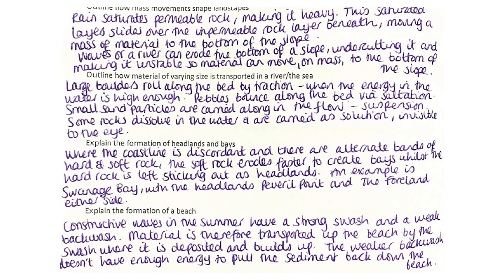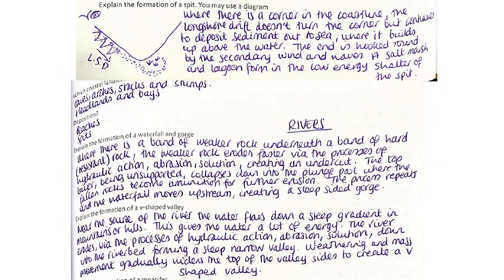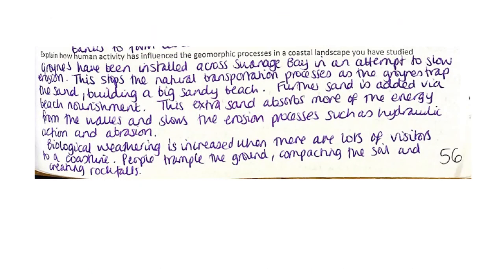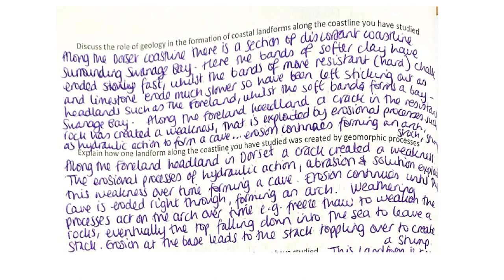Mass movements are where a large amount of material falls down at once, like a landslide. These can happen where a river or the sea undercuts the bottom of a cliff, causing material to fall or slide down. Or where you've got impermeable rock with permeable rock above it — the permeable layer gets saturated and heavy and slides down on top of the impermeable rock below. Topics we've covered include headlands and bays, formation of a beach, spits, waterfalls and gorges, V-shaped valleys, meanders, oxbow lakes, floodplains, and human activity along a coastal landscape.